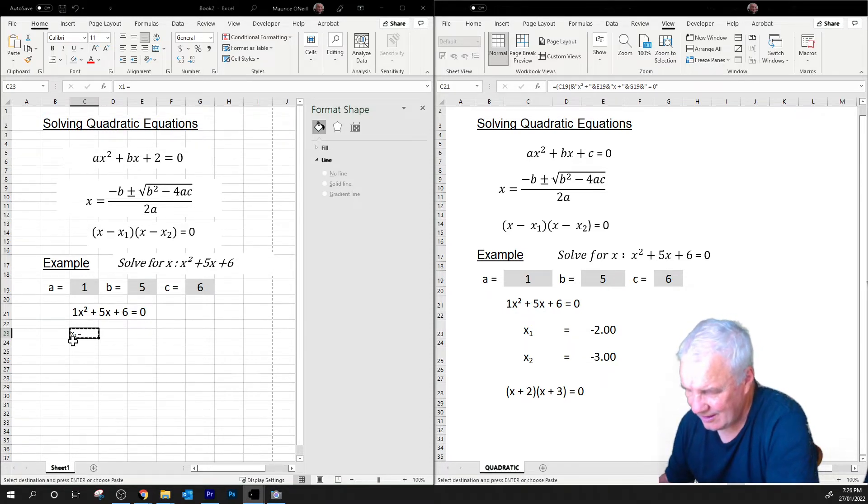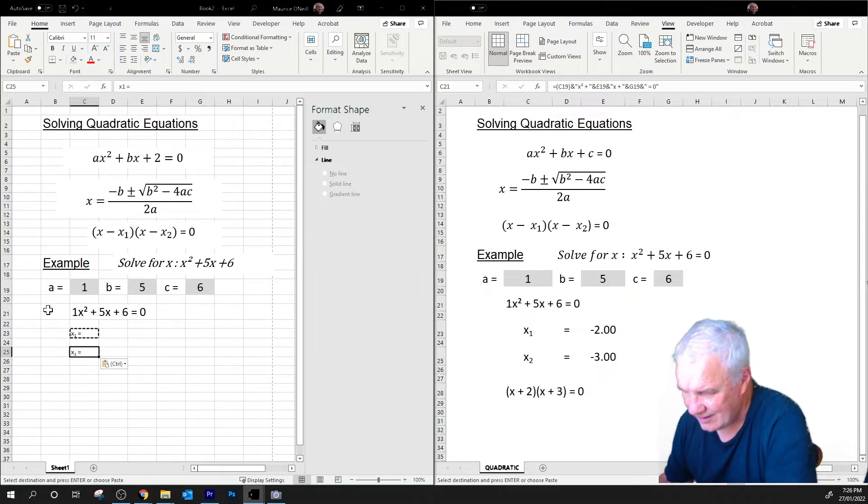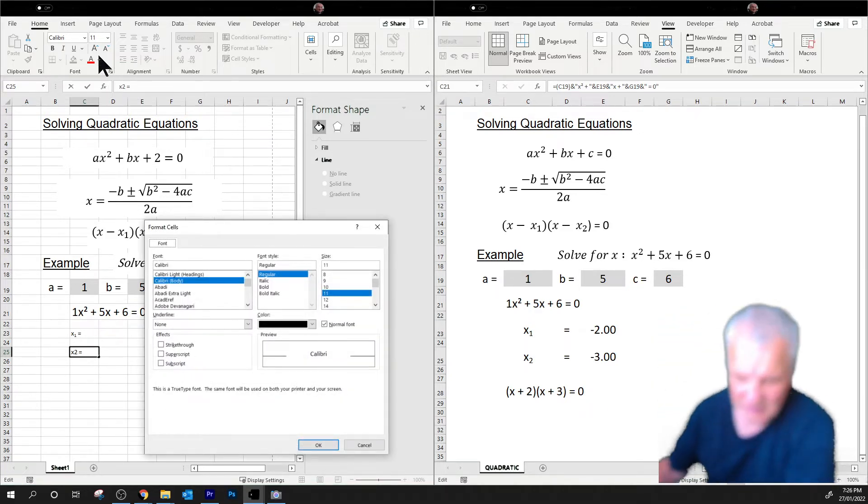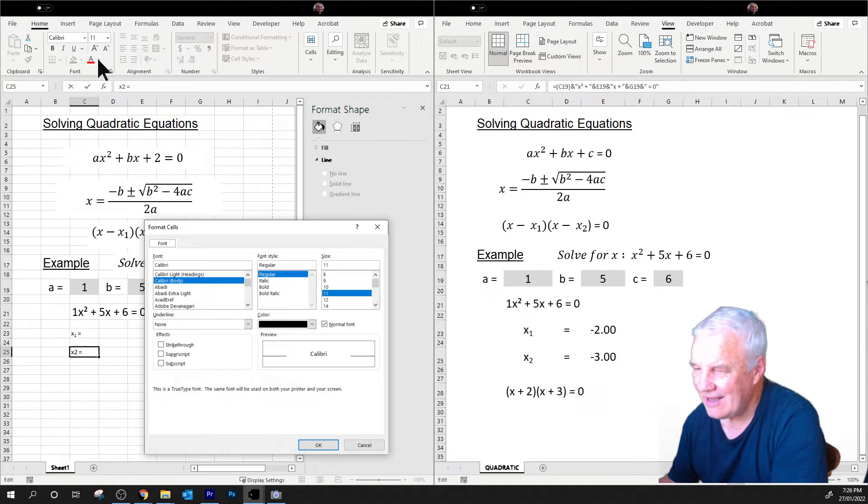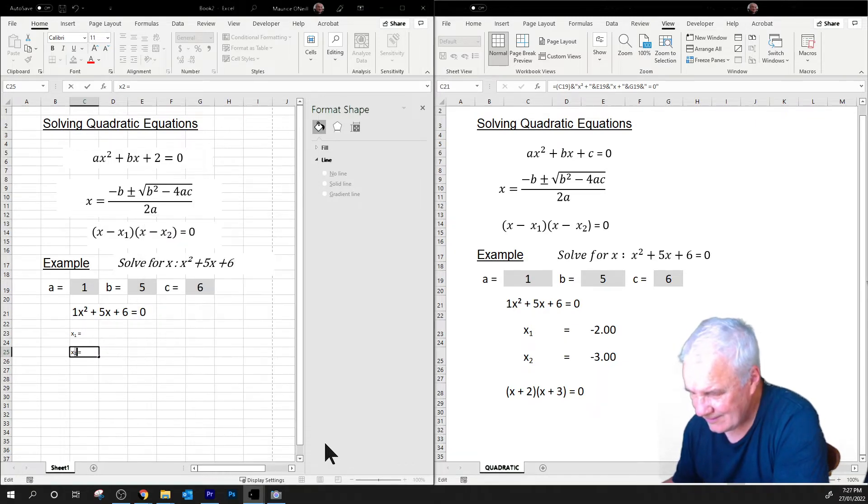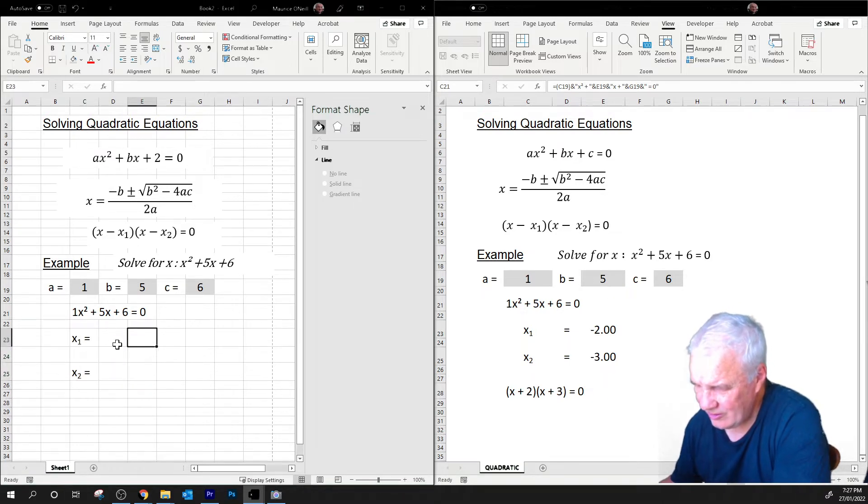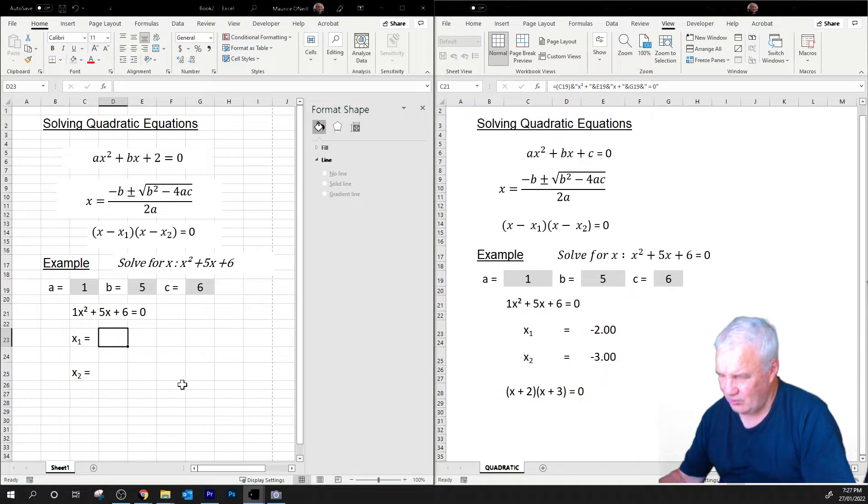I'm just going to go Ctrl+C, Ctrl+V, and I'm going to make that a 2. I'll highlight it and go to the fonts there and make it subscript. Alright, and we'll make these 20. Now all it remains to do is to put the formula in there.